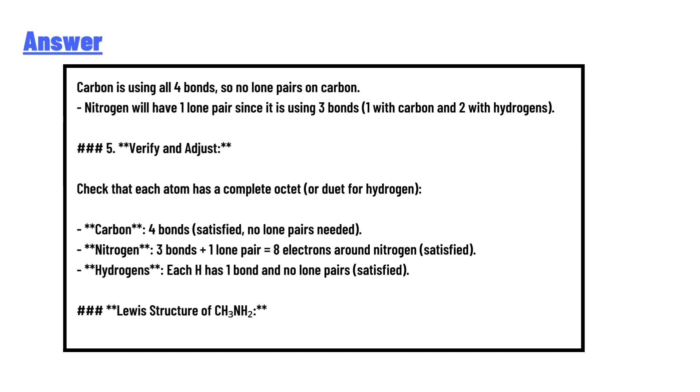Nitrogen: 3 bonds plus 1 lone pair = 8 electrons around nitrogen, satisfied. Hydrogen: each H has 1 bond and no lone pair, satisfied. Lewis structure of CH3NH2 complete.